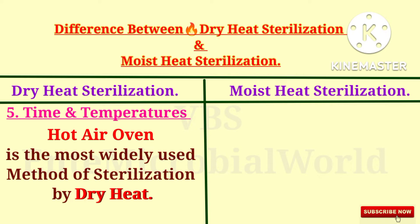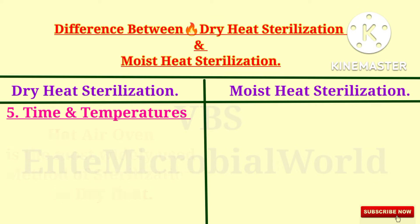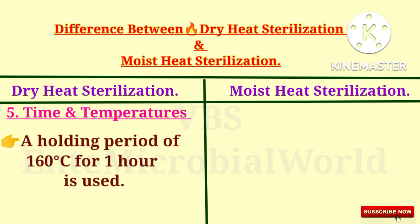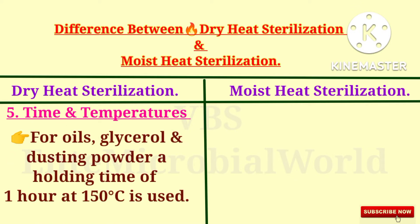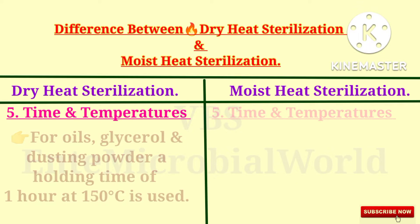The hot air oven is the most widely used method of sterilization by dry heat. Usually a holding period of 160 degrees Celsius for one hour is used. For ophthalmic surgery instruments, a sterilizing time of two hours at 150 degrees Celsius is recommended. For oils, glycerol, and dusting powder, a holding time of one hour at 150 degrees Celsius is used.